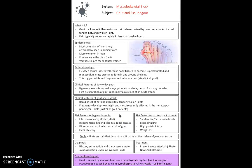This results from elevated serum urate levels which cause body tissues to become supersaturated, and monosodium urate crystals form in and around the joint. As a result we get white cell response and inflammation causing redness, tenderness, and hotness of the joint. Clinical features of day-to-day gout include hyperuricemia, which is normally asymptomatic. But the first presentation of gout is normally an acute attack where you get rapid onset of hot and exquisitely tender swollen joints. It often develops overnight and is usually in the metatarsophalangeal joints in about 89% of gout patients. Risk factors include lifestyle, hypertension, hyperlipidemia, renal disease, diuretics and aspirin, and family history.